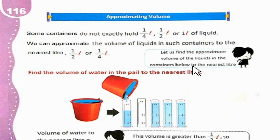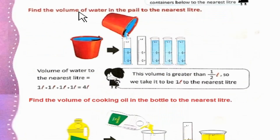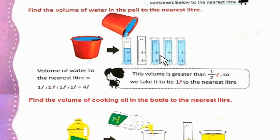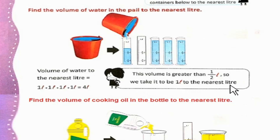Let us find the approximate volume of the liquids in the containers below to the nearest liter. अब नीचे दिये गए containers का volume find करें उनके nearest liter तक. Find the volume of water in the pail to the nearest liter. Baltic graduated cylinders में empty करते हैं तो 3 one-liter graduated cylinders full भर जाते हैं. 1 liter + 1 liter + 1 liter — और इस cylinder में 1/2 liter से ज्यादा पानी है. This volume is greater than 1/2 liter, so we take it to be 1 liter to the nearest liter.